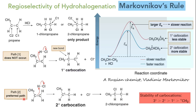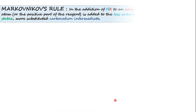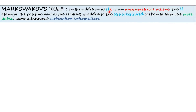Based on this mechanism and regioselectivity in the addition of hydrogen halide to an unsymmetrical alkene, Markovnikov's rule can be stated as: In the addition of HX to an unsymmetrical alkene, the hydrogen atom — the positive part of the reagent — is added to the less substituted carbon, so that the carbocation forms on the more substituted carbon, generating the most stable carbocation intermediate.